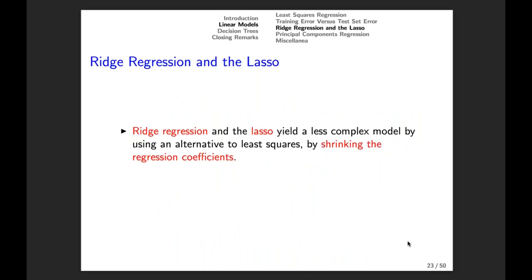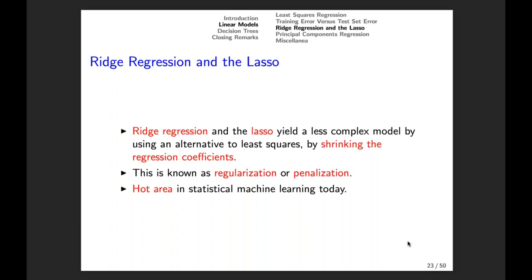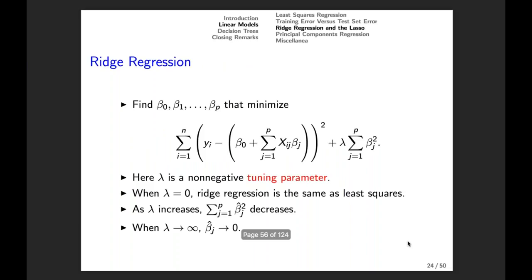Ridge regression and the lasso are two methods for fitting a linear model that are alternatives to least squares. They yield a less complex model by shrinking the regression coefficients. These are just minor modifications to the least squares fitting approach, but they can give much better results when least squares fits too complex of a model. Ridge regression and the lasso are examples of what are known as regularization or penalization approaches, and are a topic of extensive contemporary research in statistical machine learning.